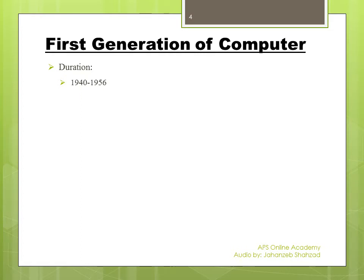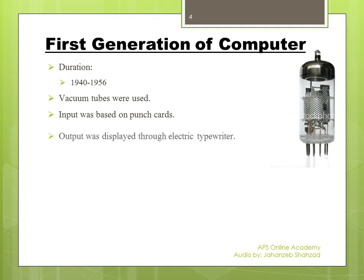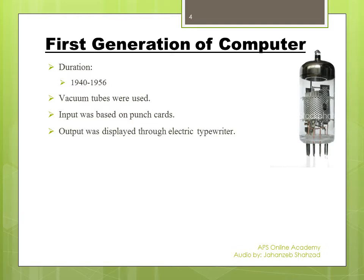All the computers developed during that time were known as the first generation of computers because they all were using the same technology of that time. Vacuum tubes were used in first generation computers. The only way to give instructions or enter data into the computer was through punch cards, and the results were displayed on paper through an electric typewriter.